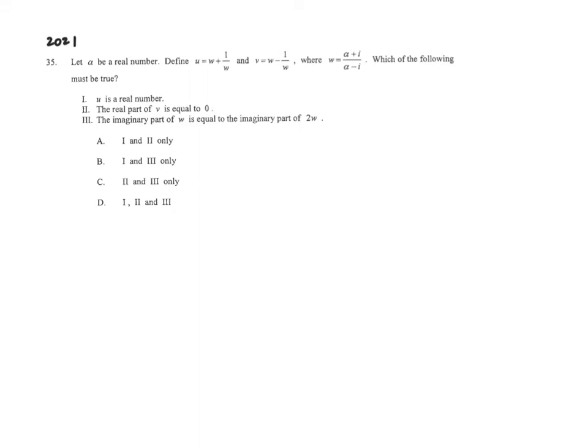Question 35 is on complex numbers. The question states that u is w plus 1 over w, and v is w minus 1 over w, where w itself is a fraction.